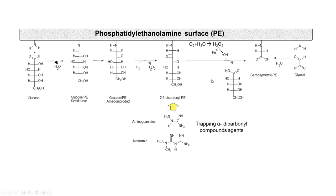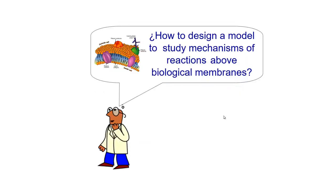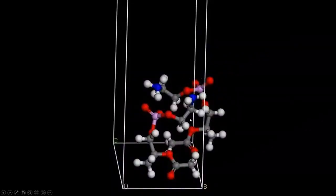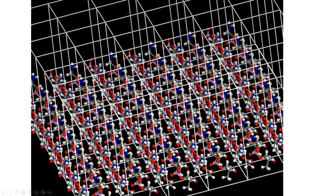This work is part of a larger project developed at the Universidad de Illes Balears in Spain for studying reactions that occur on the phosphatidylethanolamine surface. The question we had was how to design a model to study mechanisms of reactions above biological membranes. The model includes two phospholipids — two phosphatidylethanolamine molecules — with truncated acyl chains, and by periodic boundary conditions we generated a model of a phospholipid surface.